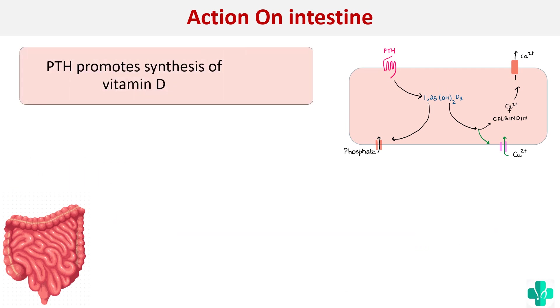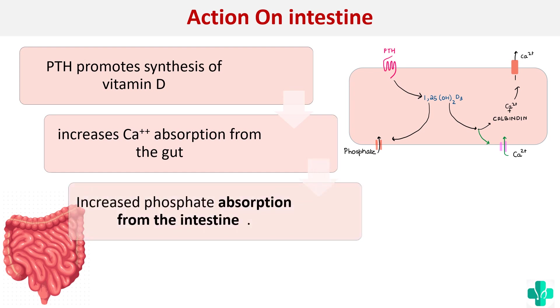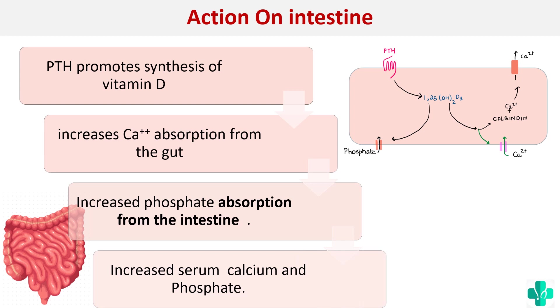So parathormone promotes the synthesis of vitamin D, leading to increased calcium absorption from the gut and also phosphate absorption from the intestine, thereby raising serum calcium and phosphate levels.